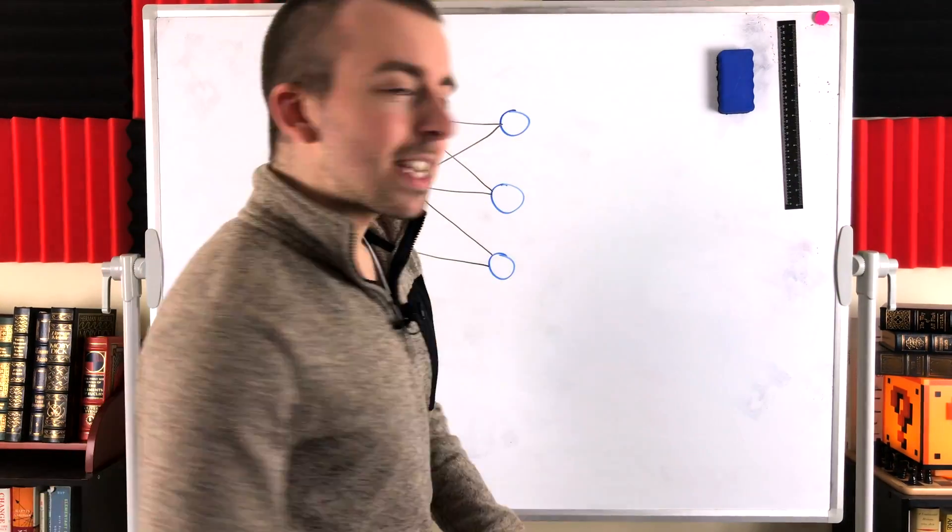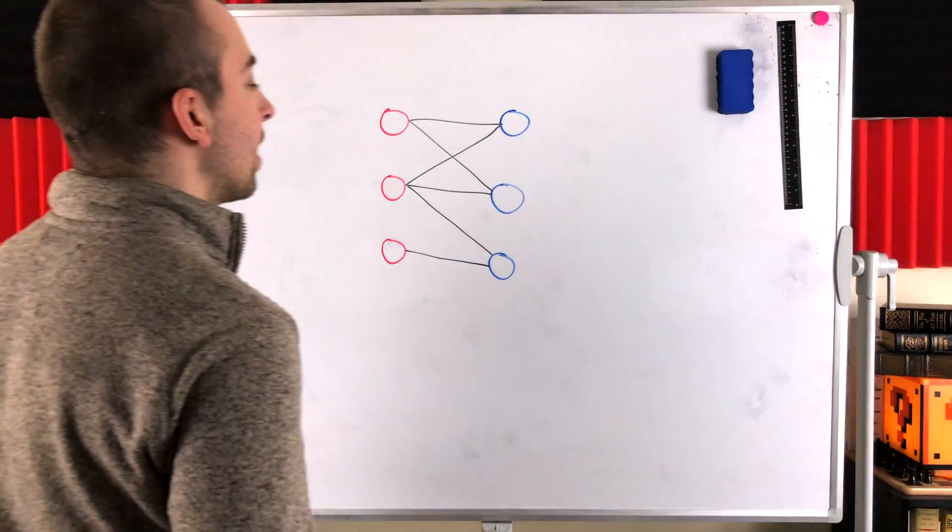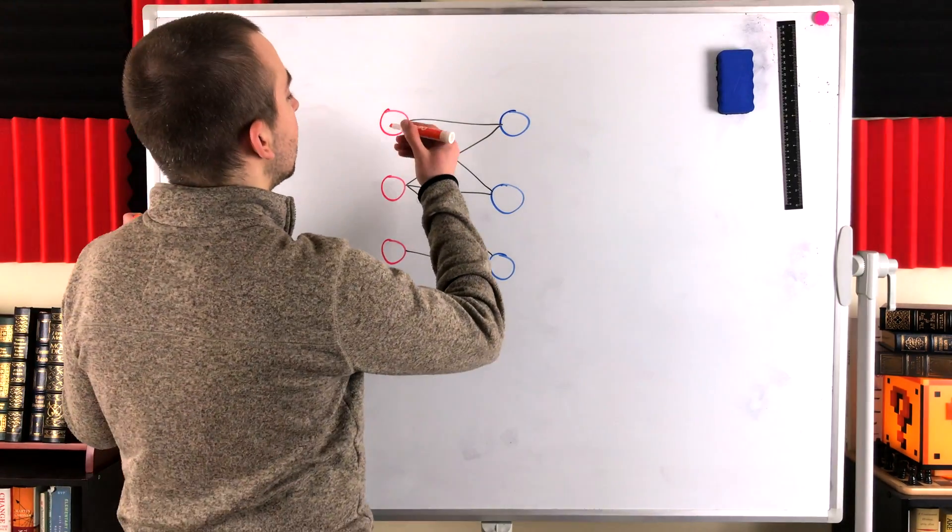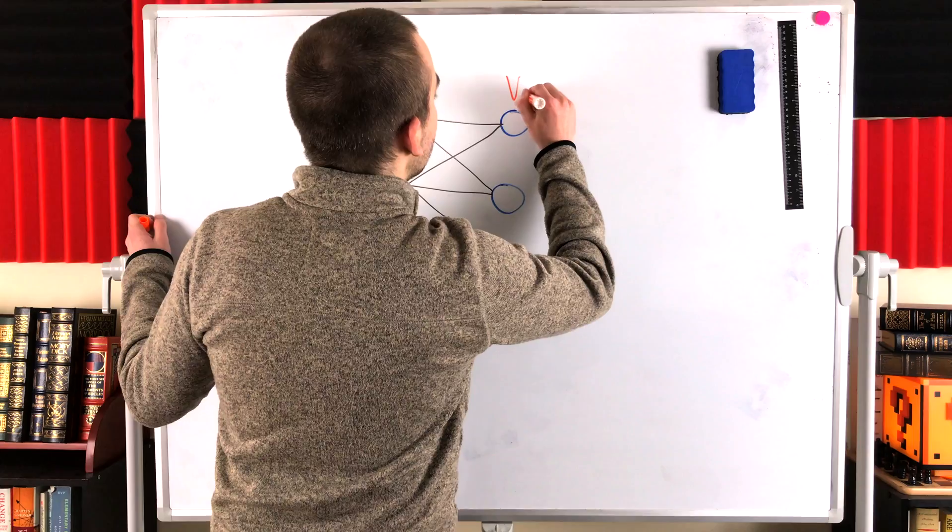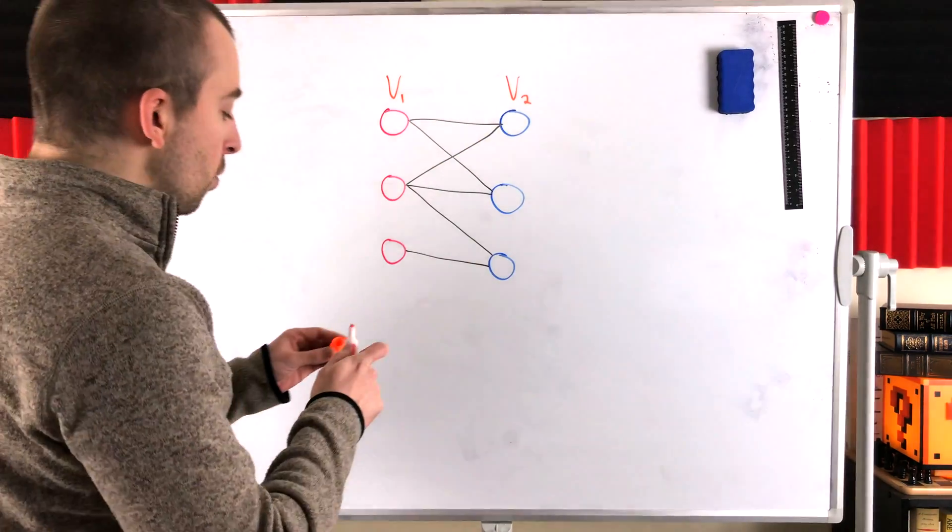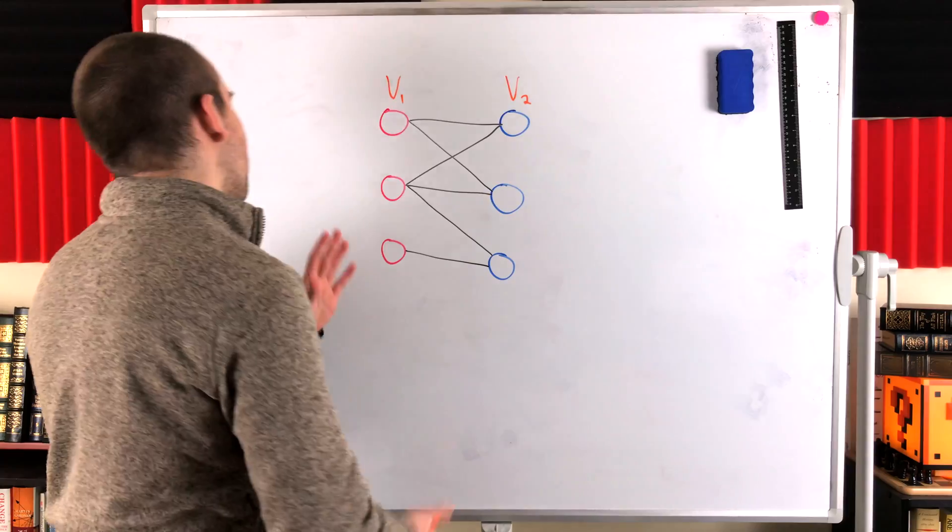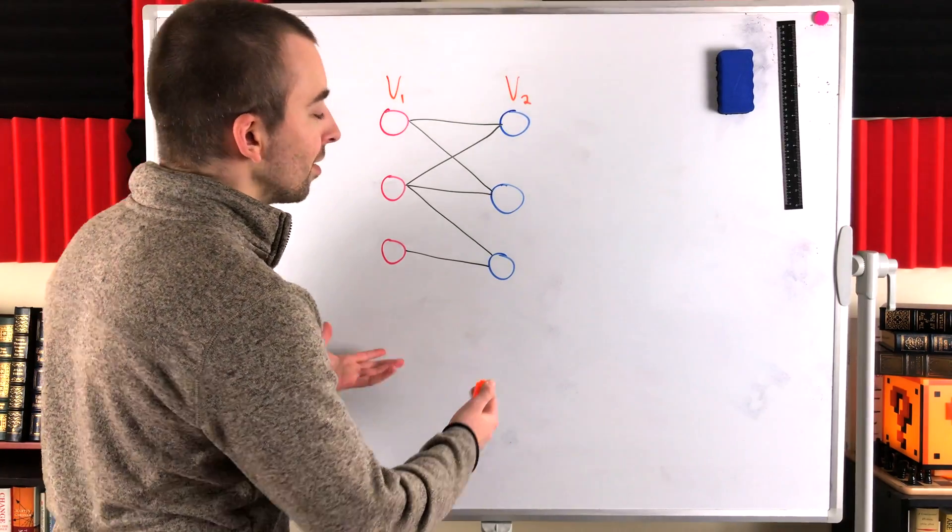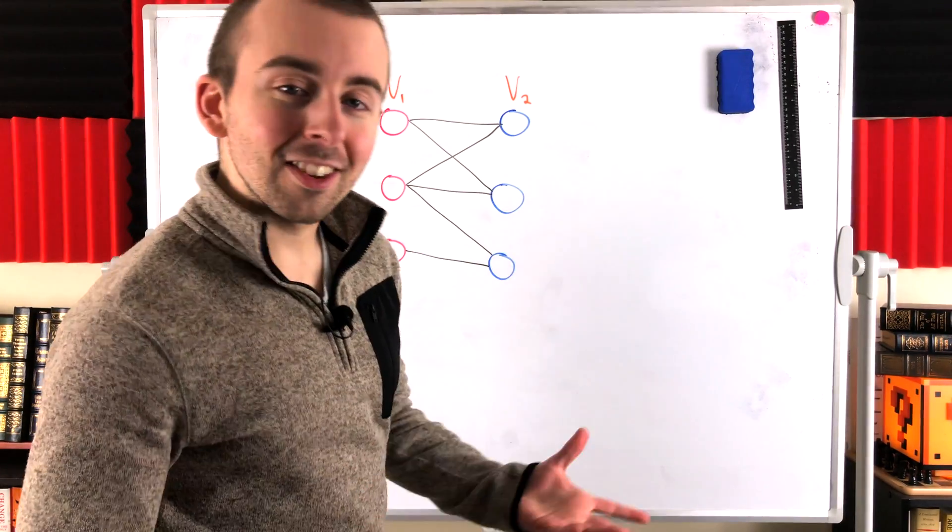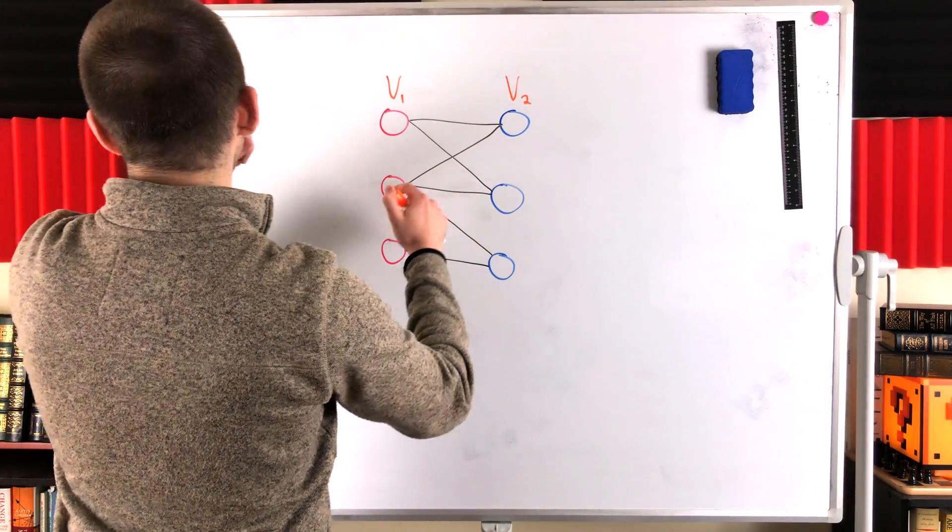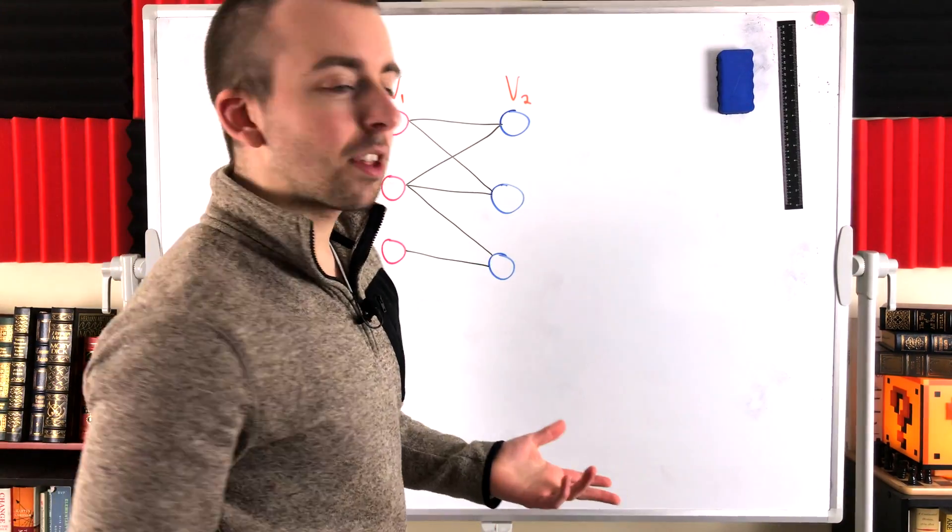Super quick recap, remember that a bipartite graph is a graph whose vertices can be partitioned into two partite sets, often called V1 and V2. You could formulate this two ways. One way is to say it's bipartite if every edge joins a vertex in one set to a vertex in the other, or equivalently, no two vertices in the same set are adjacent to each other.